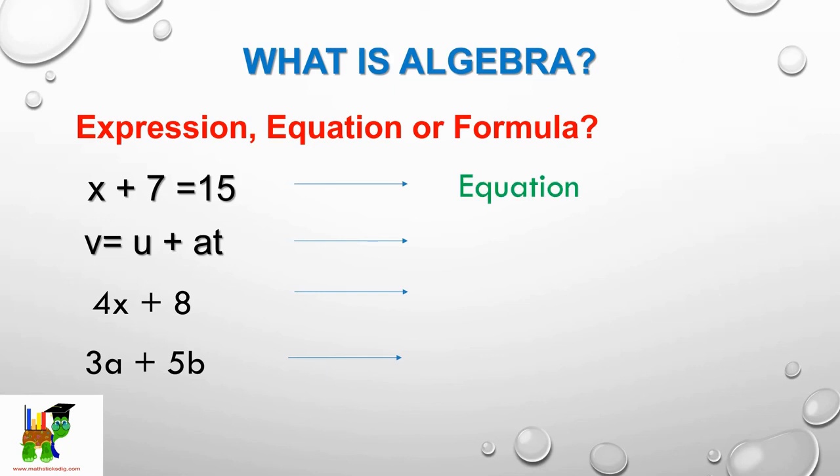And these are the answers. The first one is an equation—as you can see, with one letter and the rest are numbers, there's an equal sign. The second one is a formula—got loads of letters there. And the third one is an expression, same as the last one, as they haven't got equal signs. I hope you got this and learned from this video. Thank you for watching.